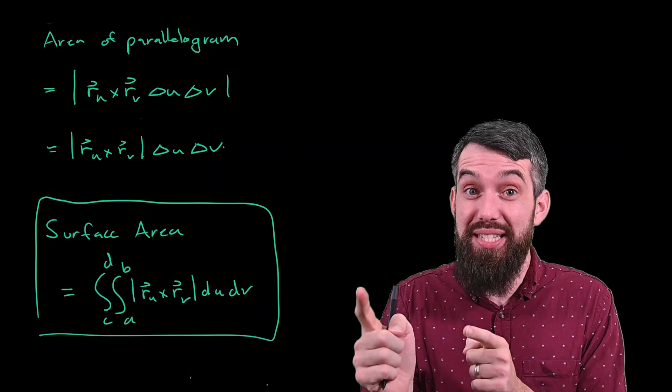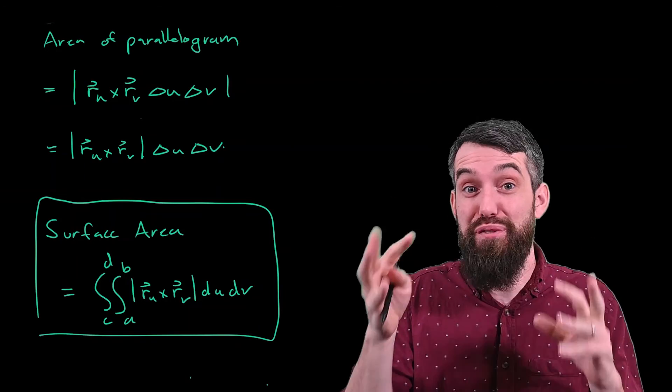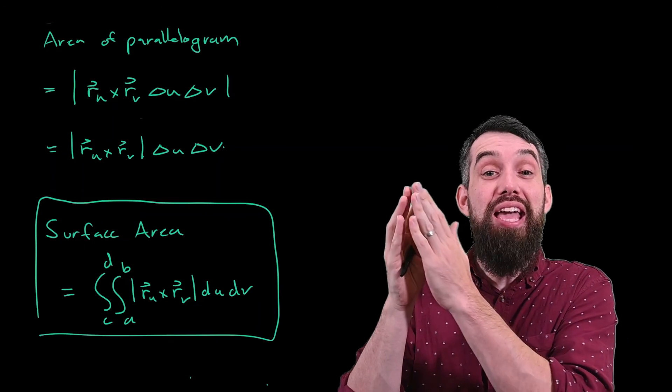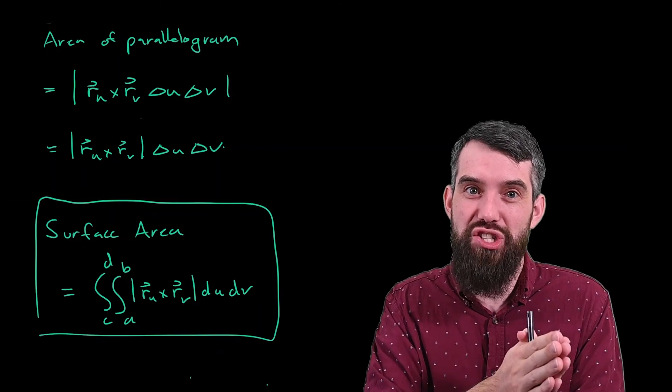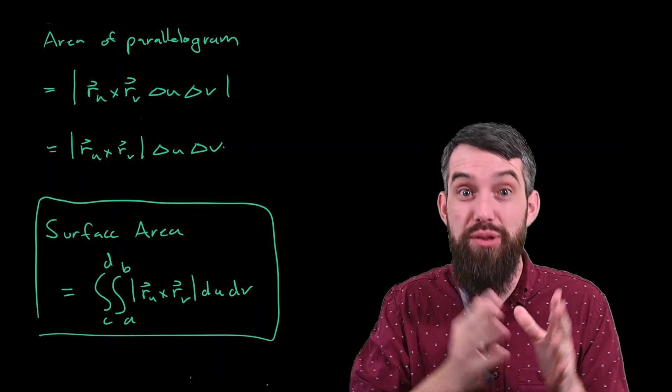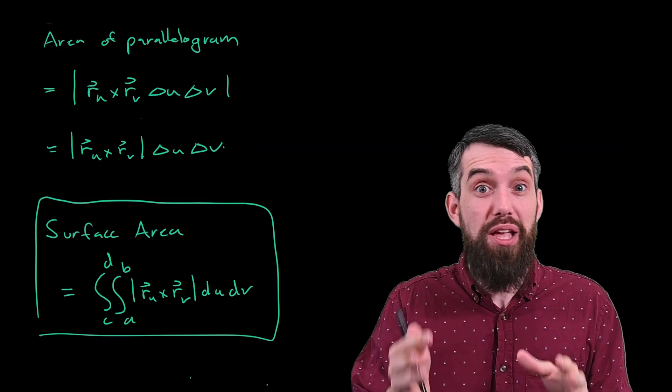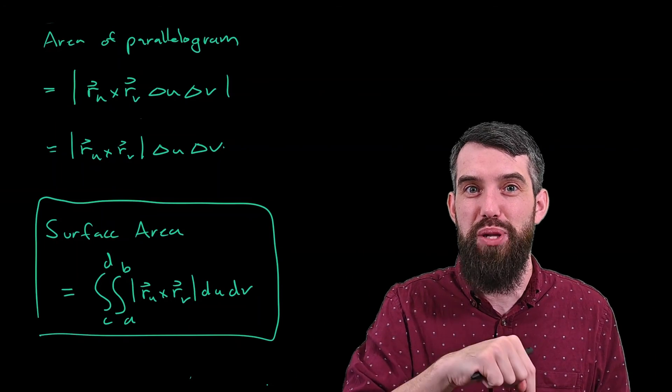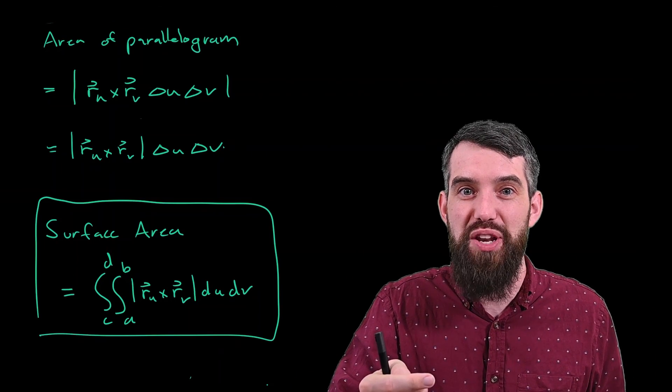So in the next video, we're actually going to see an example of this, where we compute, perhaps for the first time in our lives, the surface area of a sphere of radius A, and show that that really is going to be 4 pi A squared. And we're going to do it using precisely this formula. So if you enjoyed this video, please do give it a like. If you have any questions, leave them down in the comments below, and we'll do some more math in the next video.